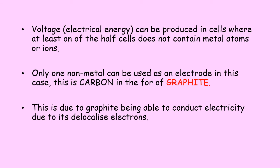Voltage or electrical energy can be produced in either type of cell, including where at least one half cell does not contain metal atoms or ions. In this case, only one non-metal can be used as an electrode, and that is carbon in the form of graphite. This is because graphite can conduct electricity, unlike diamond — the other allotrope of carbon. So if we want to create voltage, we need to use graphite as one of our electrodes.